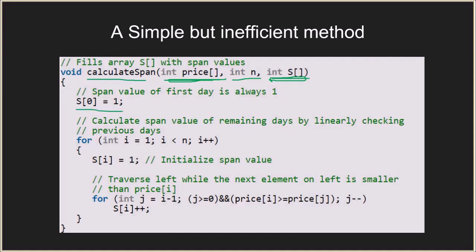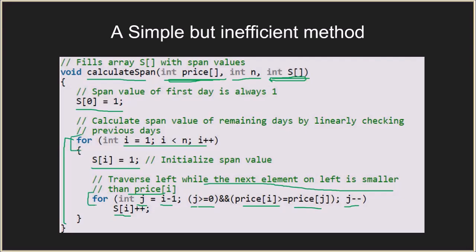The price array holds the prices for each day and we fill the span array with the computed spans. We initialize the span for the first day at index zero as one, since it will always be one. We then run a loop from index one to n minus one, initializing the span value as one because the element itself is counted. We start a second loop with j equal to i minus one, decrementing j while j is greater than or equal to zero and price[i] is greater than or equal to price[j], incrementing the span each iteration.